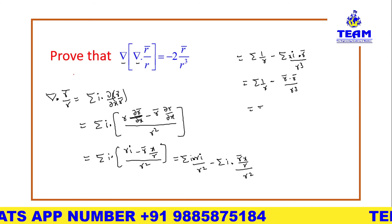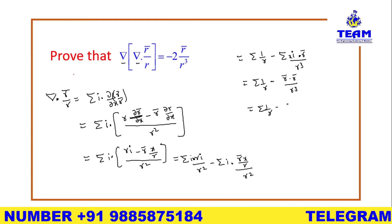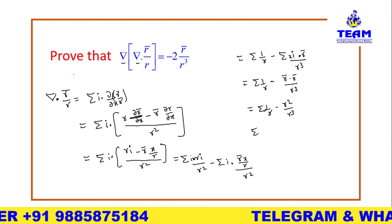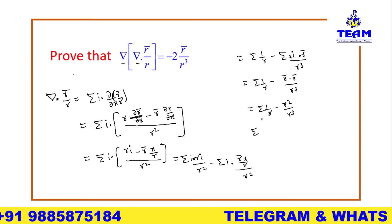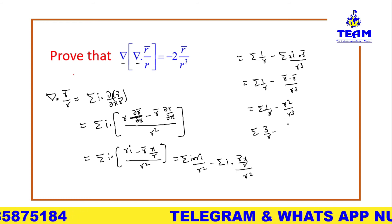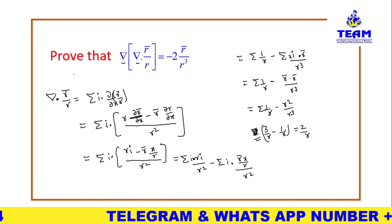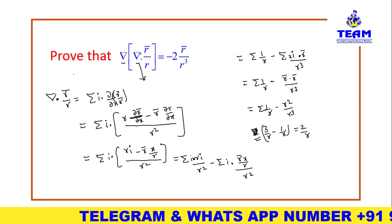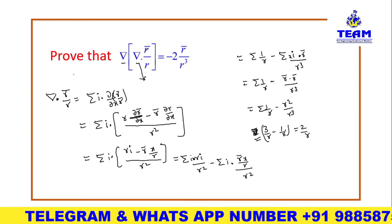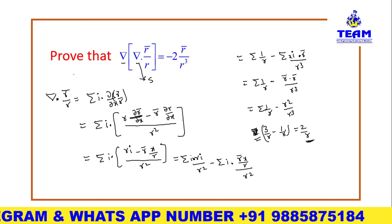Now r̄·r̄ = r², so the second term becomes r²/r³ = 1/r. For the first term, summation 1/r: r depends on x, y, z — three variables — so the summation gives 3/r. Therefore: ∇·(r̄/r) = 3/r − 1/r = 2/r. This is a scalar, which is the result of the dot product inside the bracket.